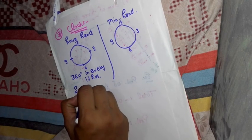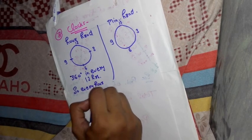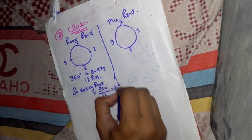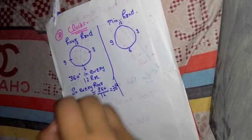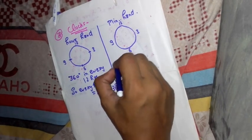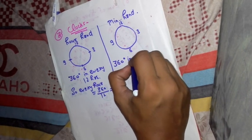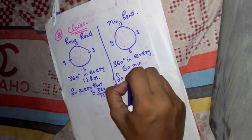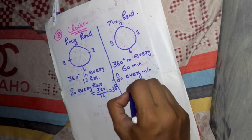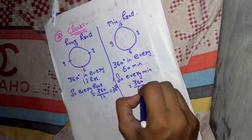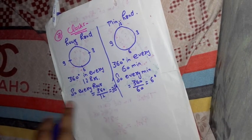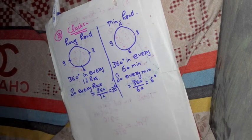So every hour, how much it rotates? It rotates 360 by 12, that is 30 degrees. A minute hand rotates 360 degrees in every 60 minutes. So for every minute, it rotates 360 by 60, and that is 6 degrees. So now by the help of that two things, we can easily calculate the angle in clocks.